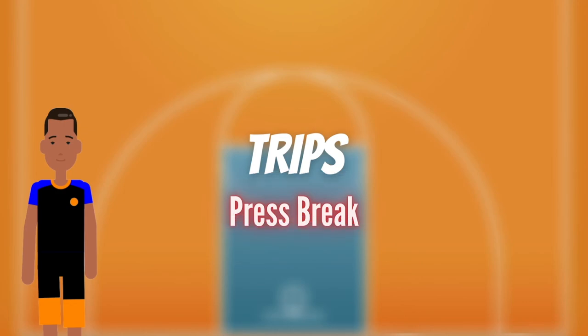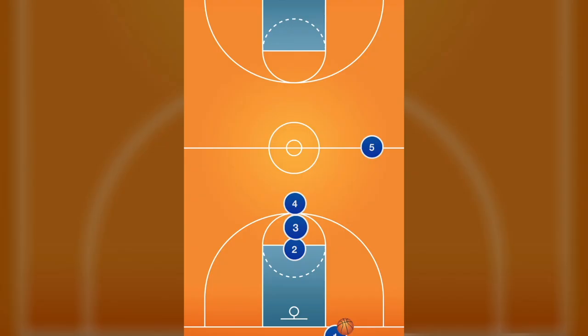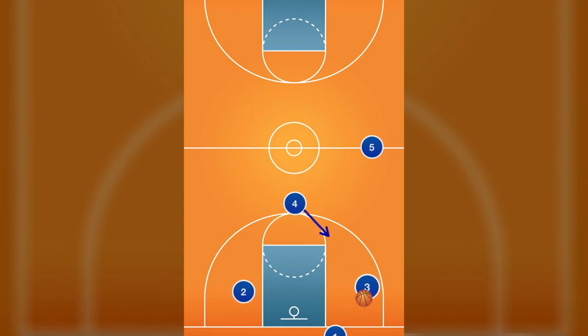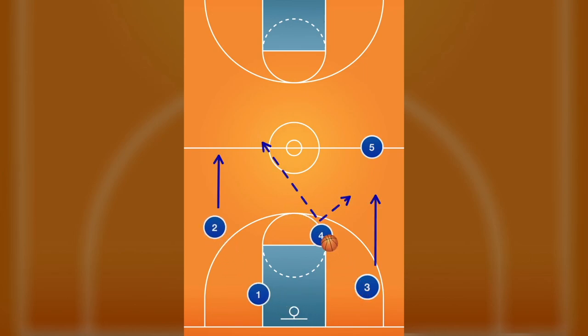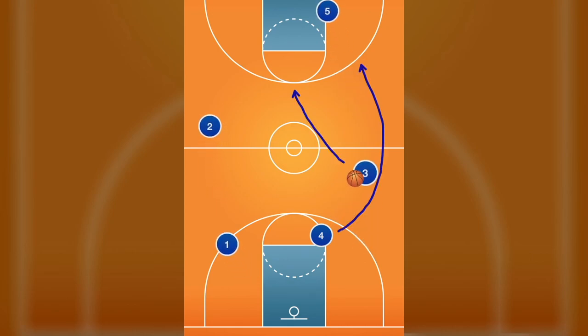Another good press break for youth teams is Trips. It is called Trips due to the triple stack at the foul line. Three players stack and one player goes to half-court on the ball side. The first two players will pop in opposite directions to get the ball inbounds. Once they have the ball, they will look for the third person in the stack who will flash hard to the ball side. From here, they will run a quick give and go to advance the ball up the court.